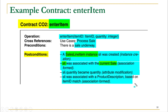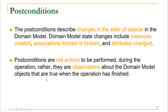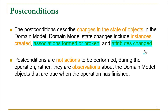The final postcondition is that the sale line item must be associated with a product description based on the item ID. So if the sale line item refers to a keyboard, the product description of the keyboard must be associated with that sale line item. To summarize, postconditions describe changes in the state of objects in the domain model. These domain model state changes include instances created, associations formed or broken, or attributes which have changed — for example, the quantity attribute has changed, or the instance of sale line item was created, or the product description was associated with the sale line item.